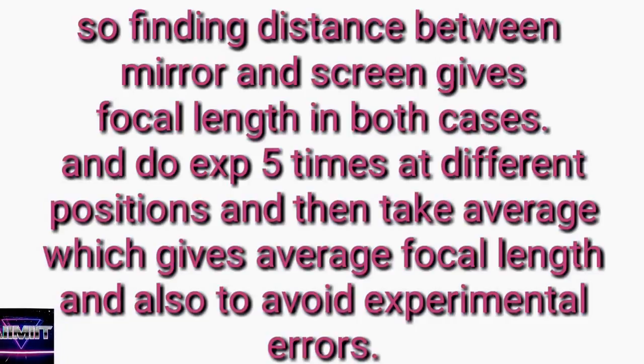The key difference between the lens and mirror experiment is that in the mirror experiment, the screen is placed between the object and the mirror. Finding the distance between the mirror and the screen gives the focal length in all cases. Do the experiment four or five times to avoid experimental error, and take the average of all five values to find the average focal length.